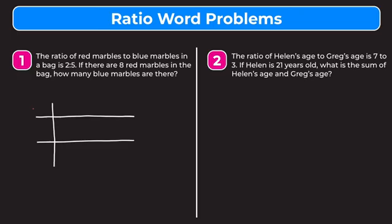I want to put red up here and blue marbles here, and we want to set up the initial ratio that they gave us. We know that the ratio of red to blue marbles is two to five. Now we want to fill in what we know in this next column — we know that there are eight red marbles, so we're going to put eight in this spot.